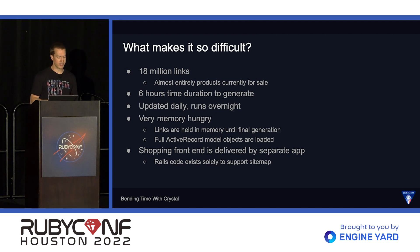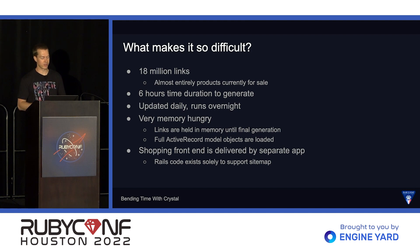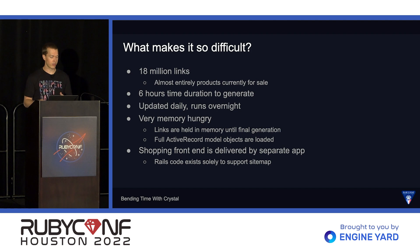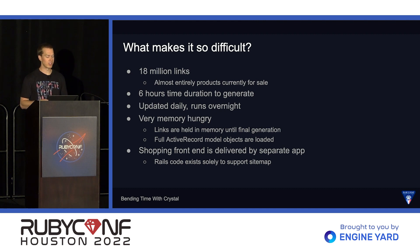We're also loading entire objects out of our database instead of just the fields we need for sitemap generation. Changing that would improve memory usage a little, but it still doesn't solve it because we're still accumulating links in an array — 18 million of those links. And one last note: our shopping frontend for customers isn't even delivered by the Rails monolith anymore. It's delivered by one of those Elixir apps. That means some of our Rails code isn't necessary anymore — it's only used in sitemap generation.